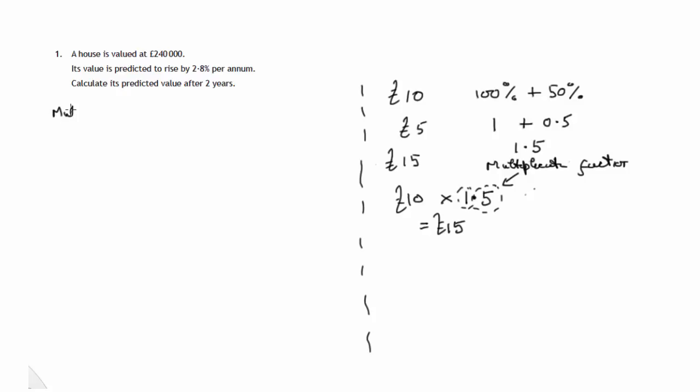So in this case, the multiplication factor is equal to 1, that gives you the whole of this, plus, now changing 2.8% into a number, there's your 2.8, there's your decimal point. Divide it by 100, move the point two places to the left. You can do this in your calculator if you wish. You get 0.028. So we have to add 0.028 to this one. That's the multiplication factor.